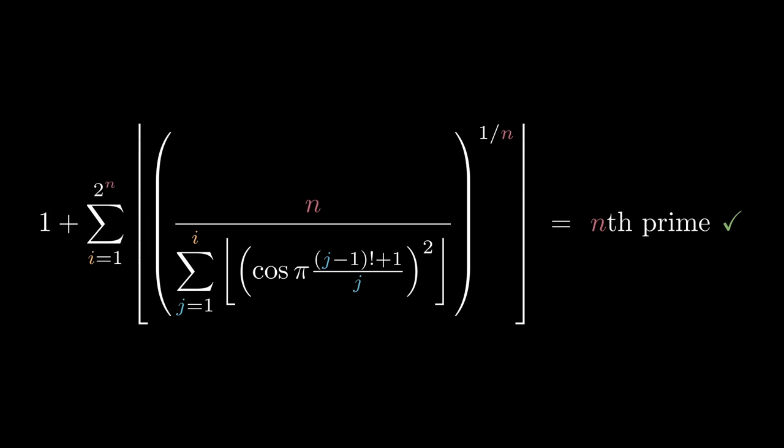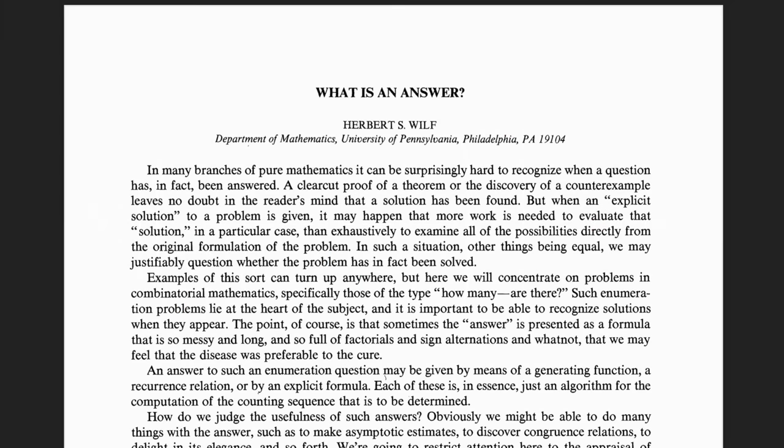In 1982, 18 years after Willans' formula appeared, Herb Wilf, who has yet another name beginning w-i-l, wrote an article called What is an Answer?, in which he argues that we should judge a formula like we judge an algorithm, by how quickly it produces results. We shouldn't accept an answer to a question that takes longer to compute results than the original definition of the thing it's supposed to be computing. He writes, The point, of course, is that sometimes the answer is presented as a formula that is so messy and long and so full of factorials and sign alternations and whatnot that we may feel the disease was preferable to the cure. Ouch.